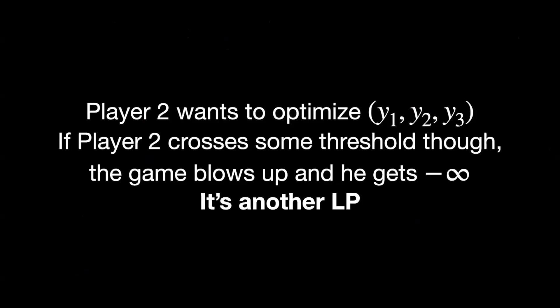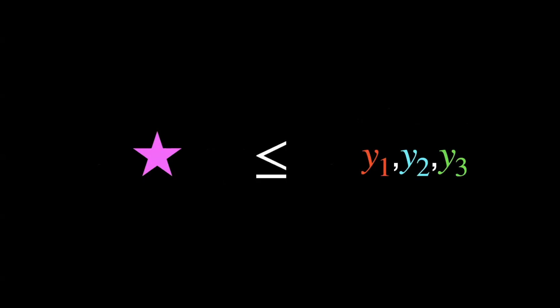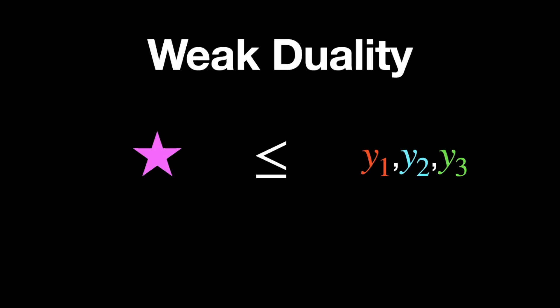The multiplier player is trying to optimize y1 through y3 — making them small in some direction — but crossing a threshold blows up the game. This is exactly another linear program: the dual linear program. When the star player goes first, we get the primal; when the multiplier player goes first, we get the dual. We know the dual's outcome is always greater than or equal to the primal's — this is known as weak duality.